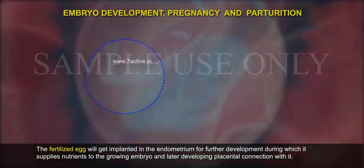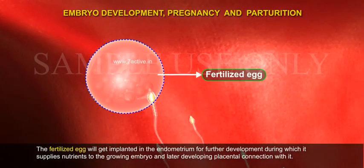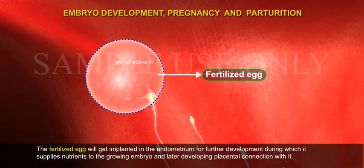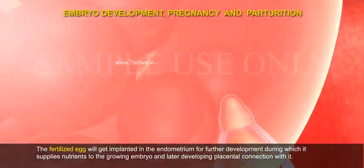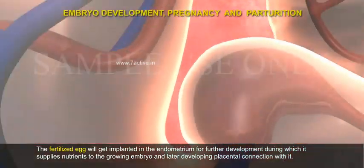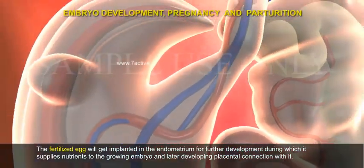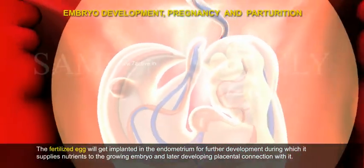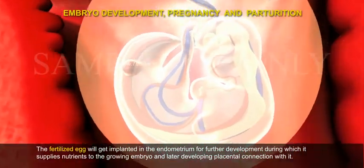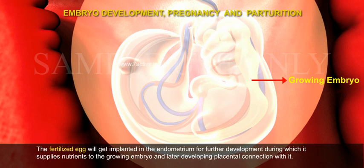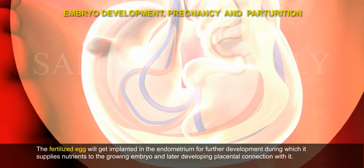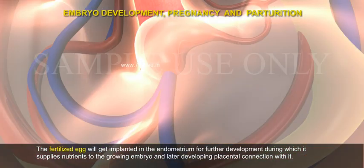The fertilized egg will get implanted in the endometrium for further development, during which it supplies nutrients to the growing embryo and later develops a placental connection with it.